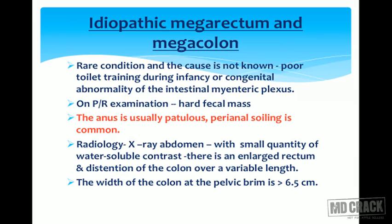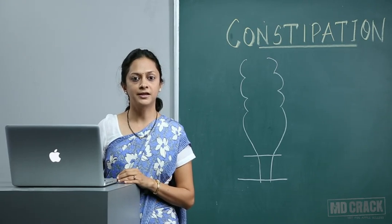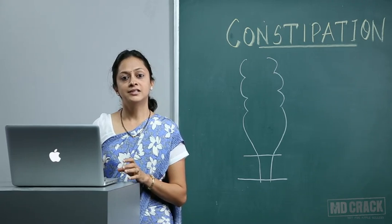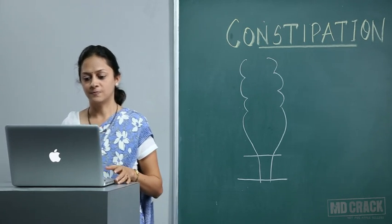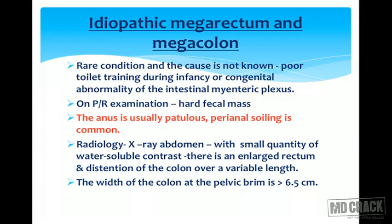Now moving to non-Hirschsprung's megacolon or megarectum — a rare condition of unknown cause where the aganglionic segment is not present as in Hirschsprung's. Poor toilet training or congenital abnormality of the intestinal myenteric plexus may be involved. On rectal examination, hard fecal mass is felt and the anus is usually patulous. Radiology shows enlarged rectum and colonic distension; a colon width at the pelvic brim of more than 6.5 cm diagnoses idiopathic megarectum and megacolon.